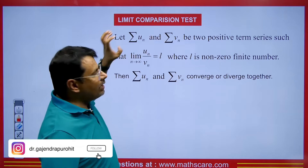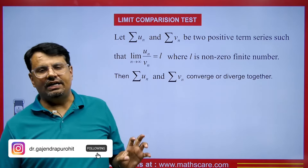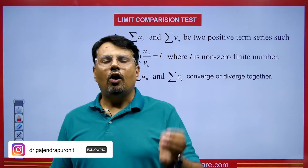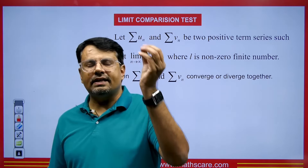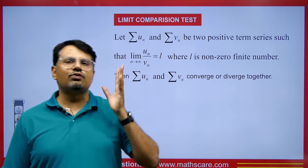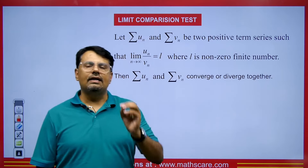Then in that case both series will have the same behavior. If one of them is divergent, then the other one will also be divergent. And if one of them is convergent, then the other one will also be convergent.